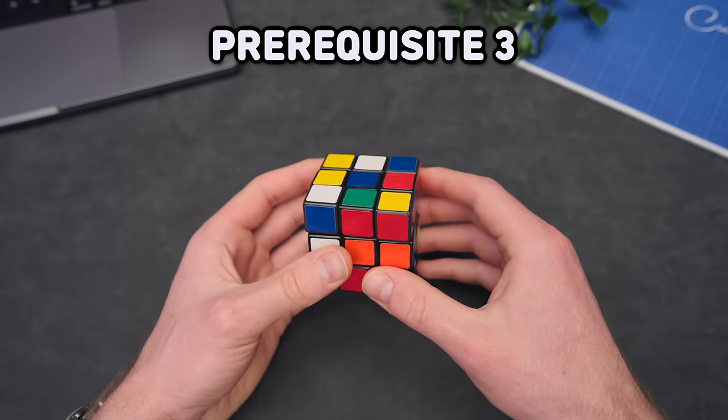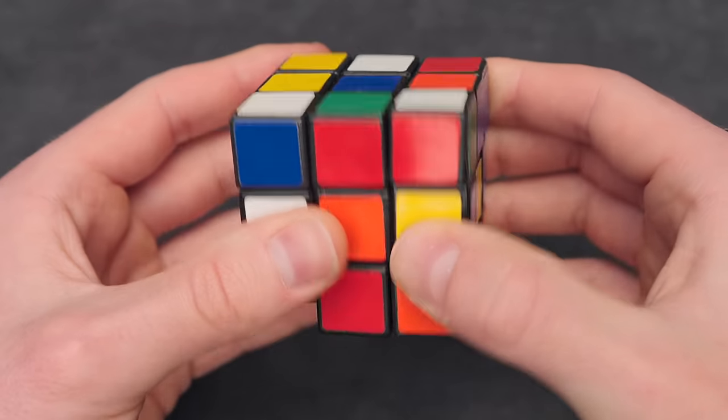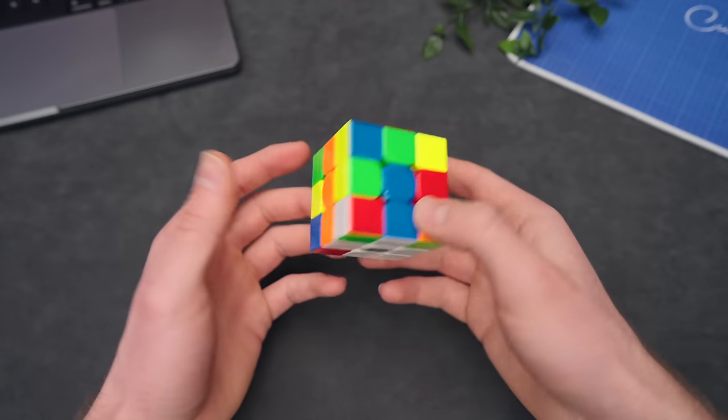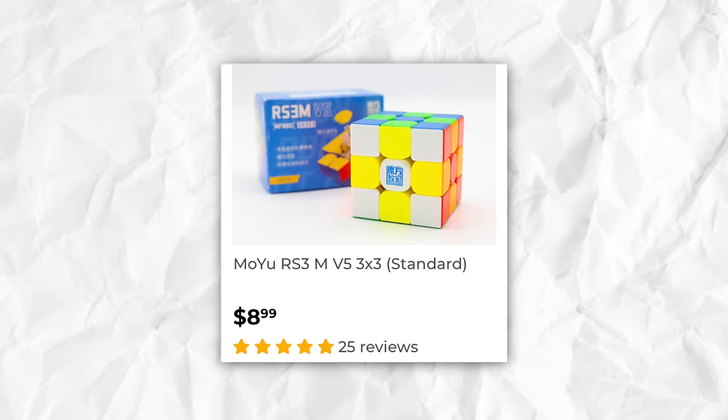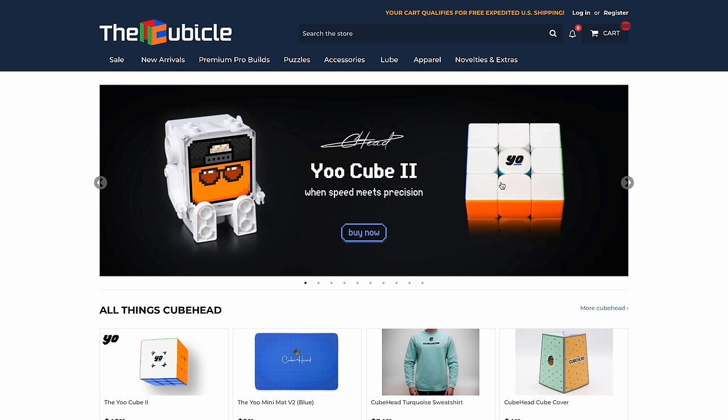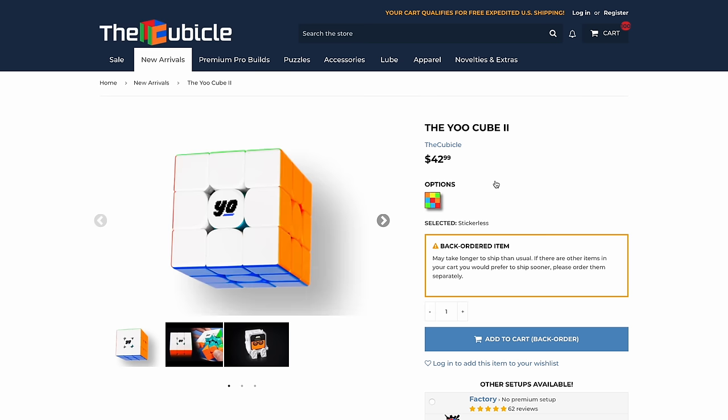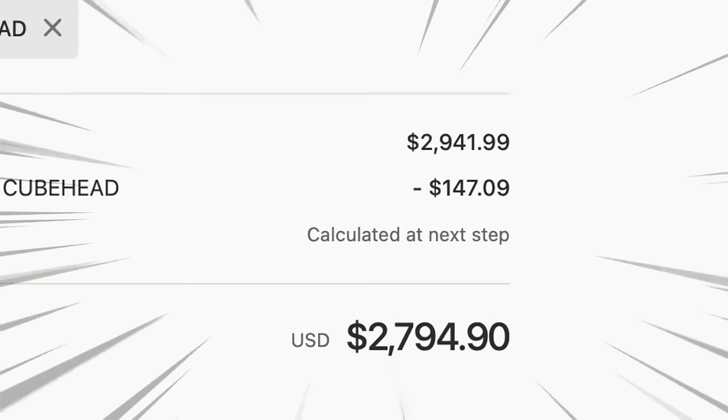And then lastly, once again, you cannot be sub 30 using a cube like this. So it's really time right now to get yourself a speedcube. You can get any sort of speedcube starting from $8. But whatever speedcube you buy, make sure to go to thecubicle.com and use discount code QPED for a huge discount.